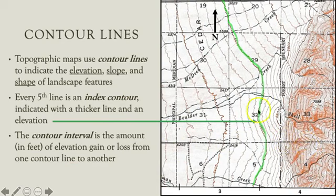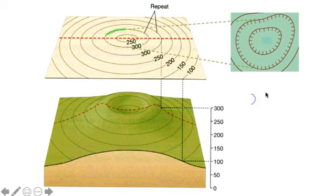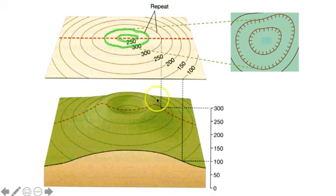North is typically directly towards the top of the map. Contour lines that contain hachures represent a closed depression, like the crater at the top of a volcano.